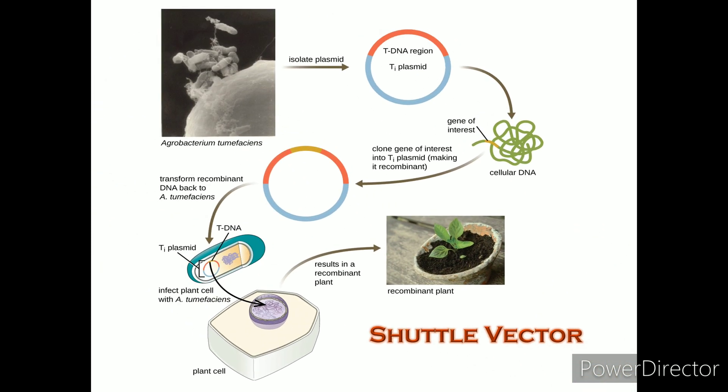Shuttle vectors: The Ti plasmid of Agrobacterium tumefaciens is useful for the uptake of genes of interest into plant cells. The gene of interest is cloned into the Ti plasmid, which is then introduced to plant cells. The gene of interest then recombines into the plant's cell genome, allowing it to produce transgenic plants.